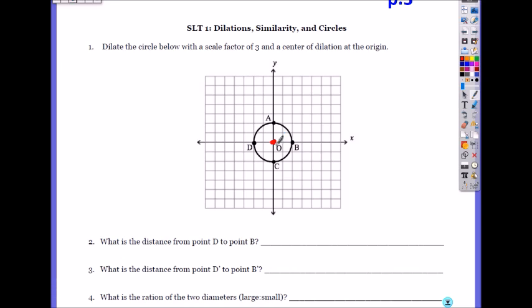So what's the radius or distance from center to B? 2, so now what do you do? You multiply by the scale factor which is 3, so now you go from the center, you go 6, 2, 4, 6. So here you put B prime.